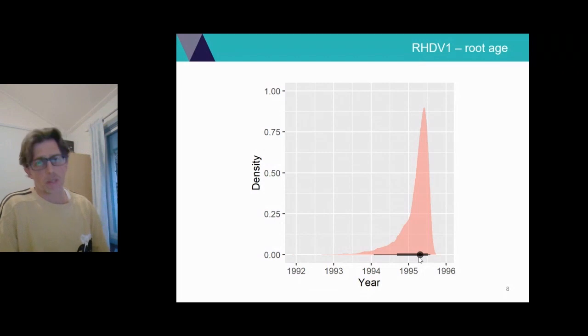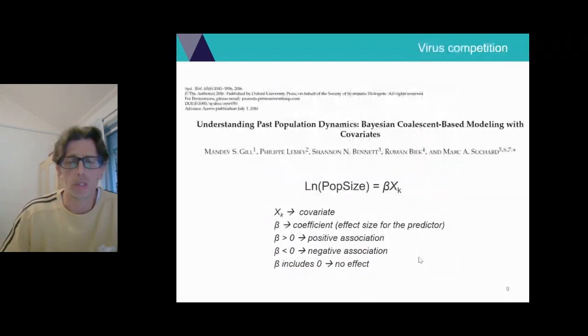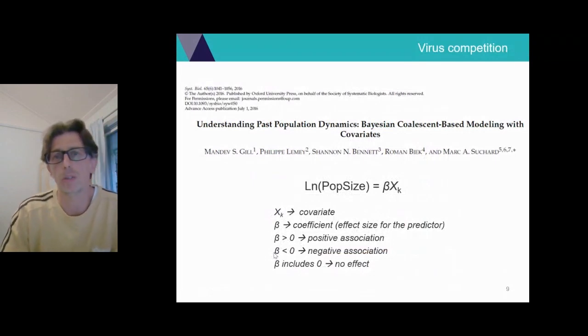As I mentioned before, an element that we wanted to look at was any competition between the two strains of the virus and we decided to use a generalized linear model framework. And as happens normally in those linear models, you have a dependent variable, which in our case is the virus population size, and you try to relate that variable to some predictors. And while doing this, you can estimate the beta coefficient. If the coefficient, which is symbolized by the β symbol here, is larger than zero, you have a positive association. If it is negative, you have a negative association. And if it includes zero, that indicates that there is not a significant effect of the predictor on the dependent variable.